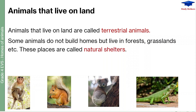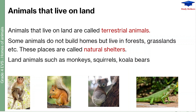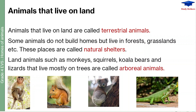Land animals such as monkeys, squirrels, koala bears, and lizards that live mostly on trees are called arboreal animals. Here is a monkey, which you can find easily around you. This is a squirrel, this is a koala bear, and this is a lizard. These animals which are mostly living on the trees are called arboreal animals.